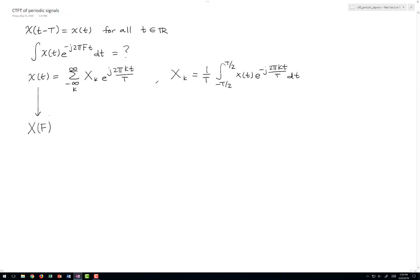So the Fourier transform of x of t is x of f. The Fourier transform is linear, so the transform of a sum is the sum of the transforms. Also the coefficients come through.